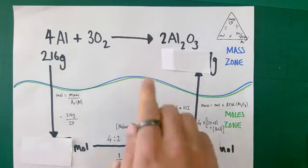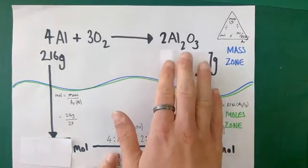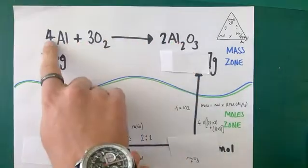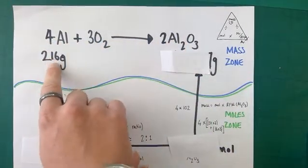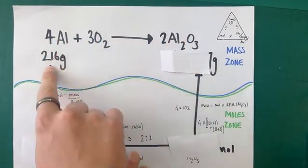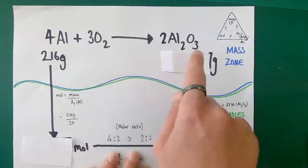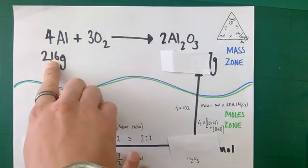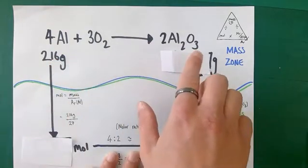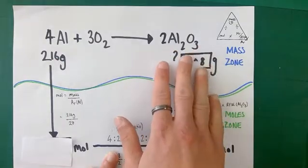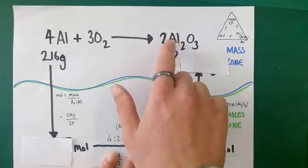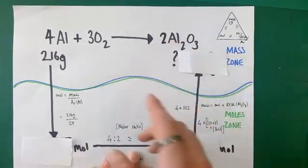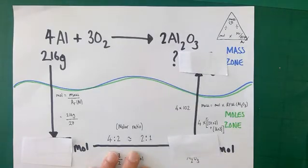Whenever you're approaching one of these calculations — for example, aluminium reacting with oxygen to form aluminium oxide — they'll give you a balanced equation, tell you the mass of one substance and ask you to work out the mass of the other. I've been given the mass of aluminium: 216 grams. The question is how much aluminium oxide could that produce?